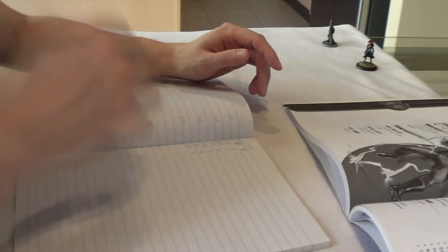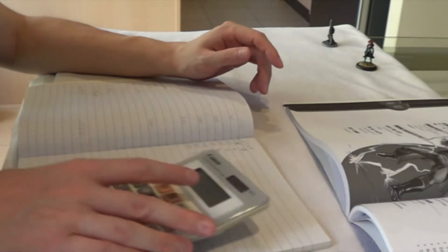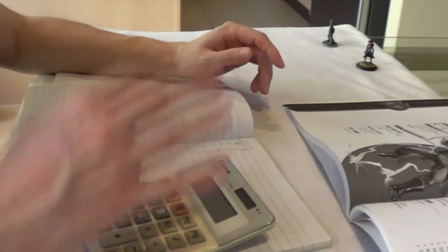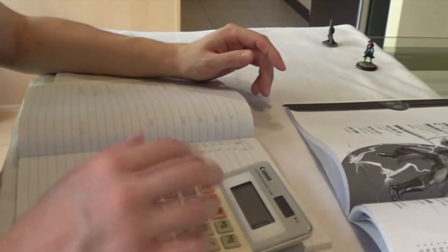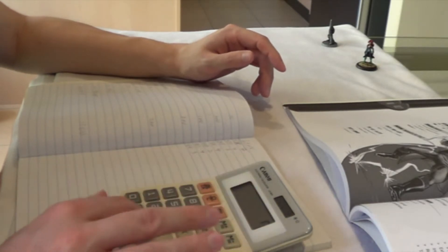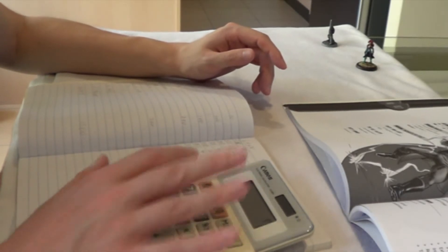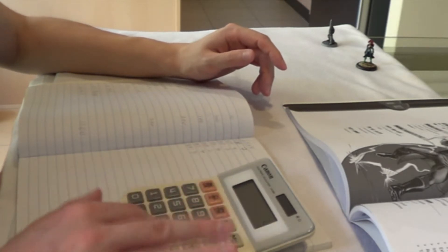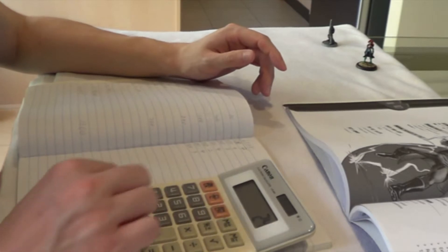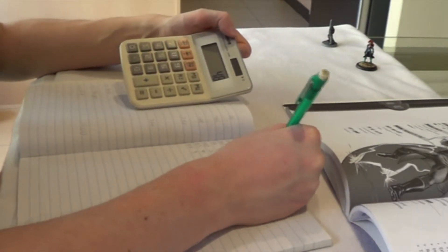To work out how many points the traits cost, because you get 1 point in each and then it's 2 points from there, it's really easy. Add them all together, minus 7 times that number by 2, I've got 48.